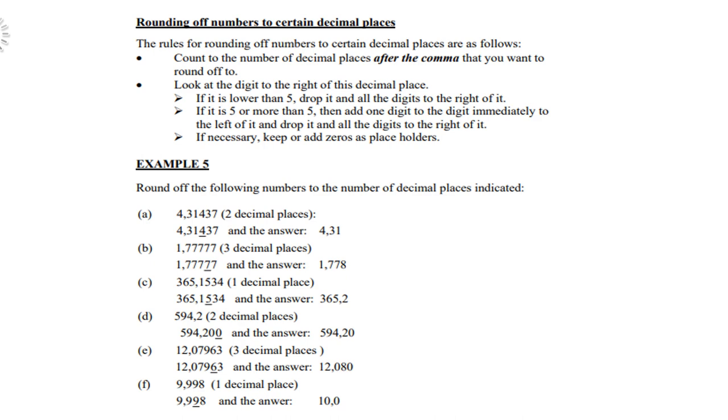Go to C. 365.1534, one decimal place. So you go to the second decimal which is a 5. So you round up. So 365.1 becomes 365.2. D, 594.2 to two decimal places. Well, you add two zeros and you'll see that that zero got no value. So therefore 594.20.